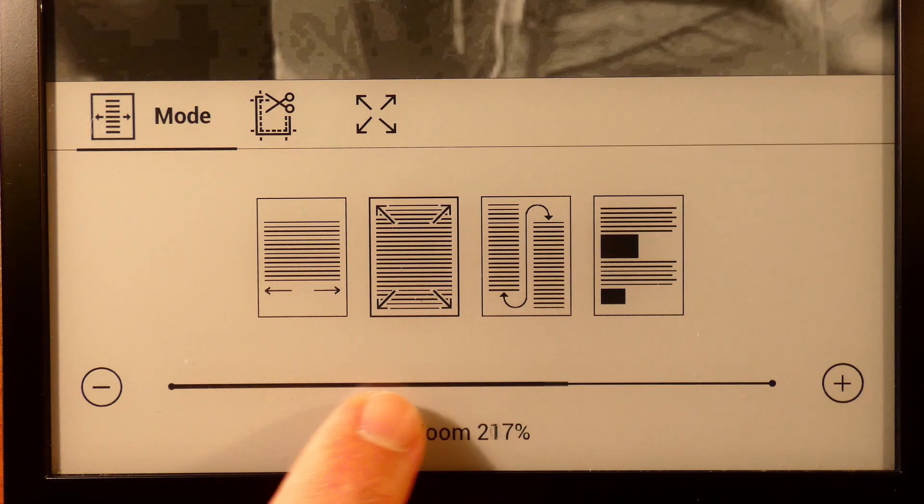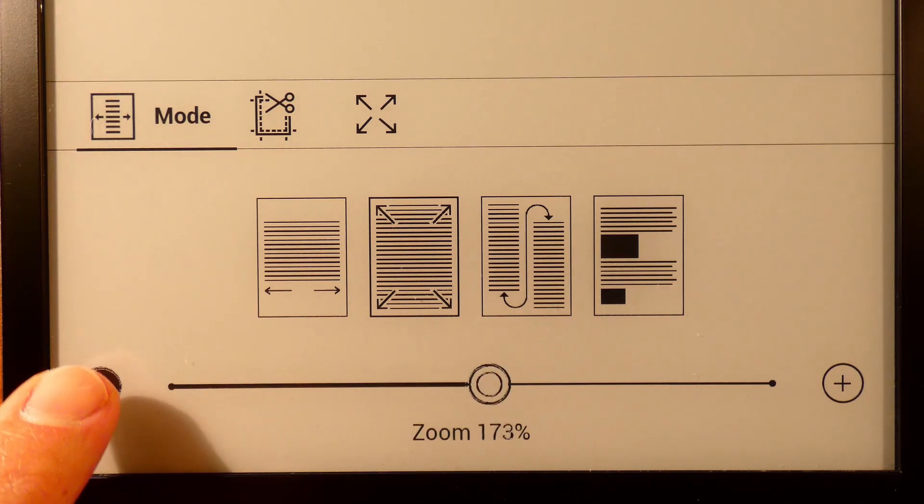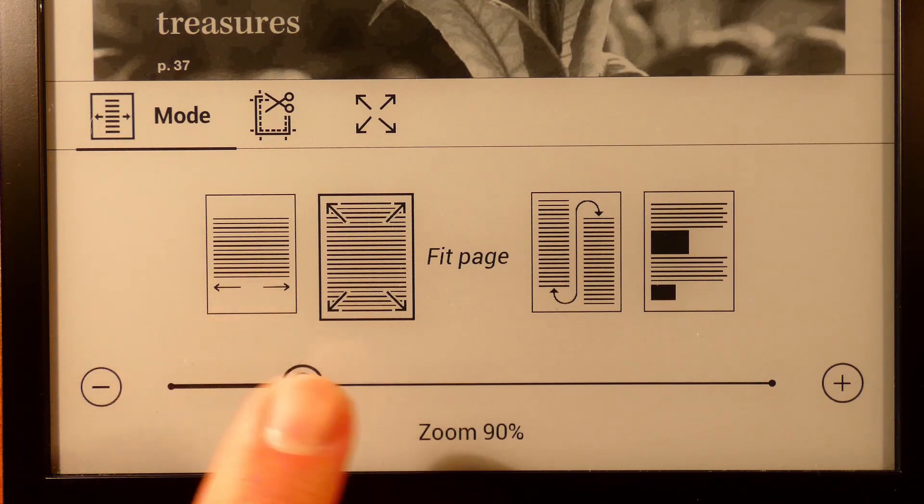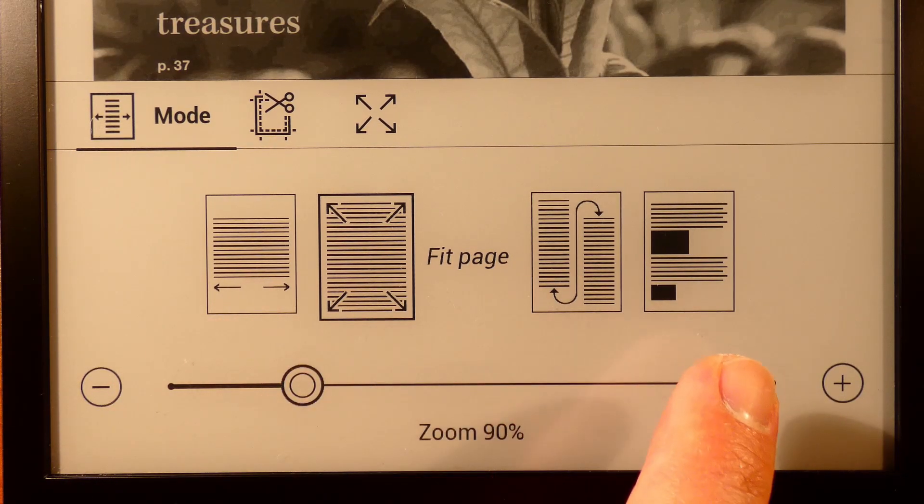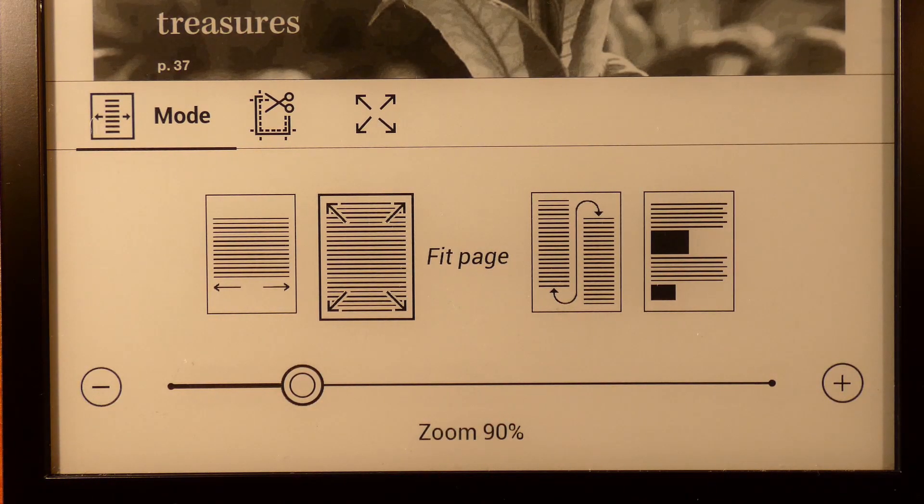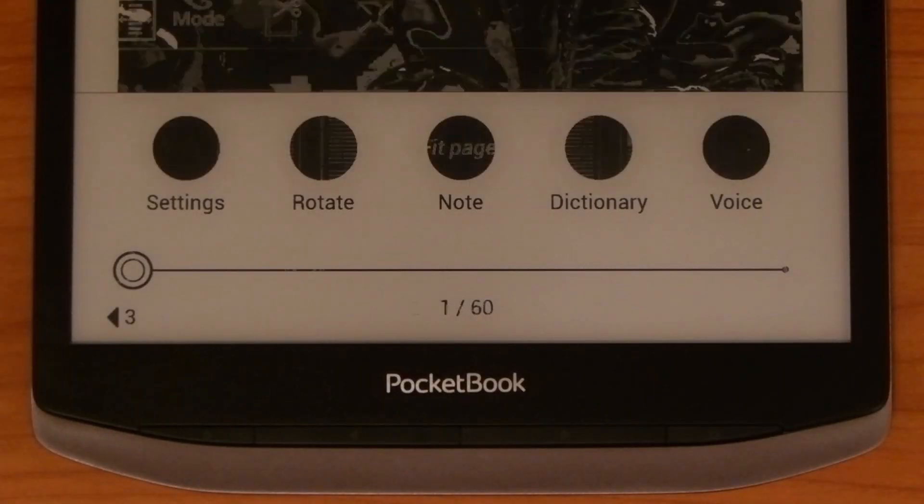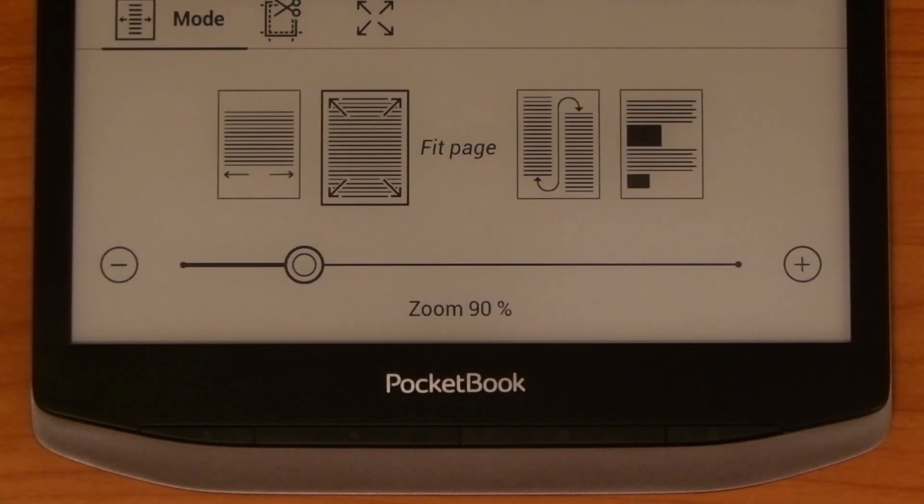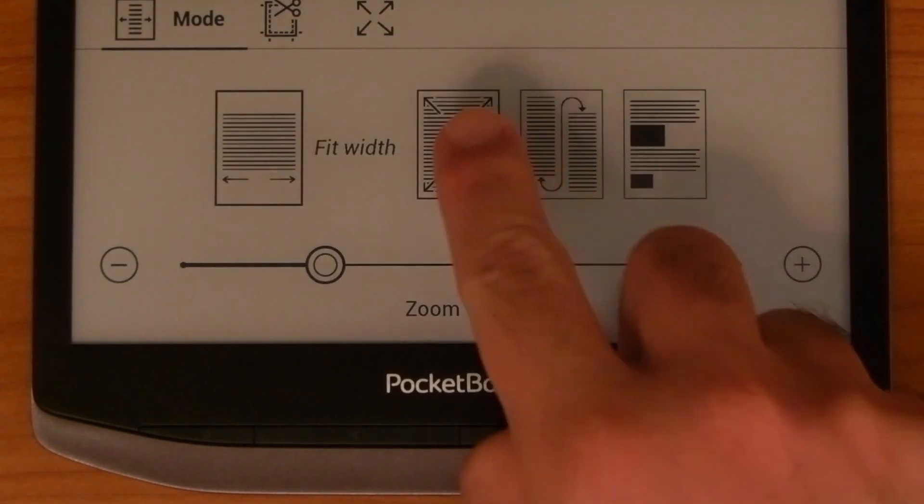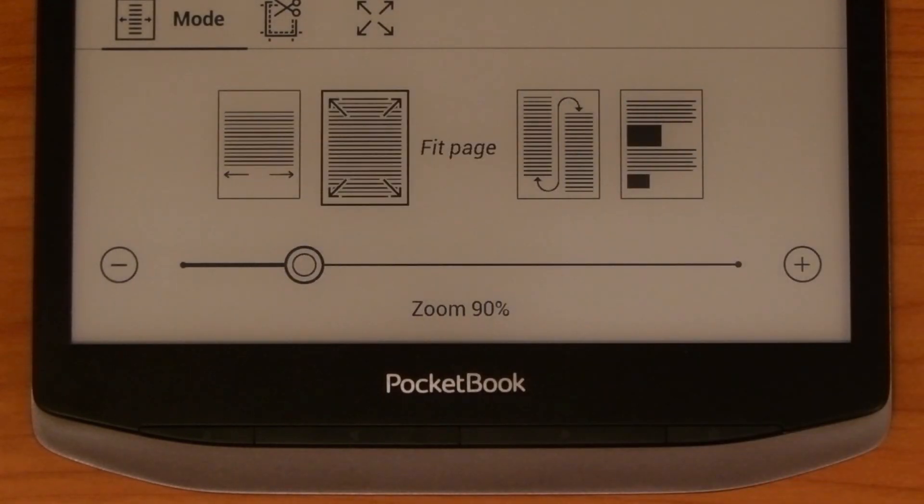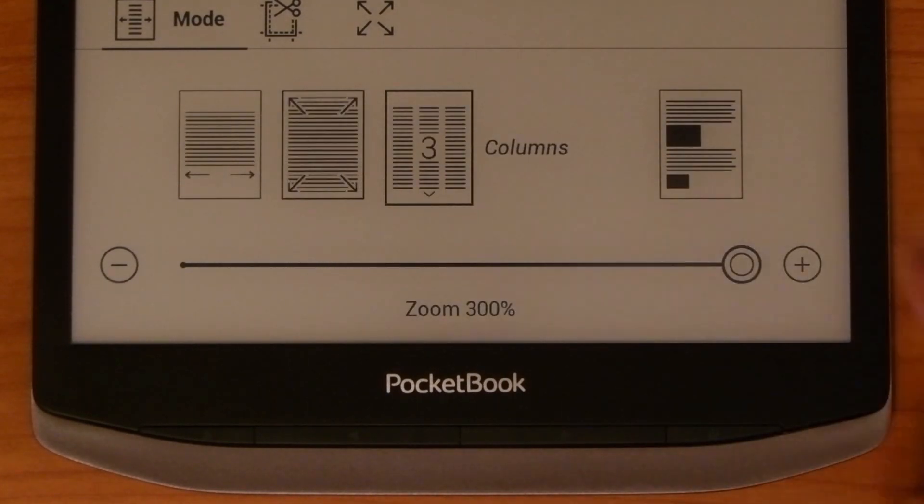If manual zoom control isn't your thing, the InkPad X also offers up a few different presets to choose from. These are located immediately above the aforementioned zoom bar and include Fit to Width, Fit Page, Column View, and Reflow modes.